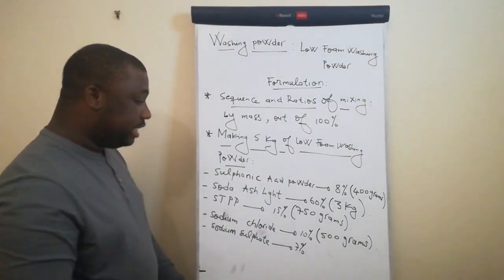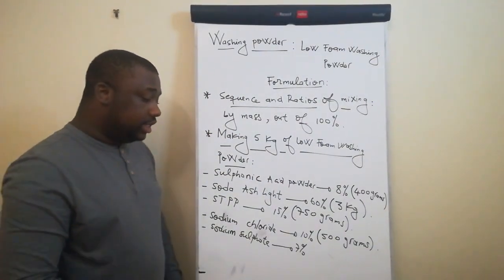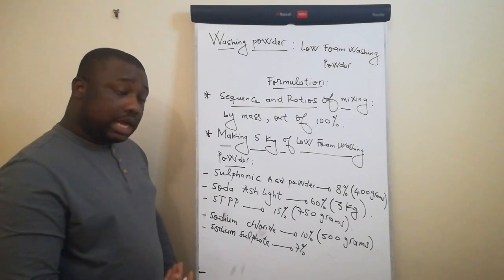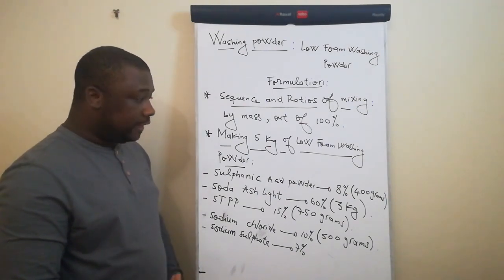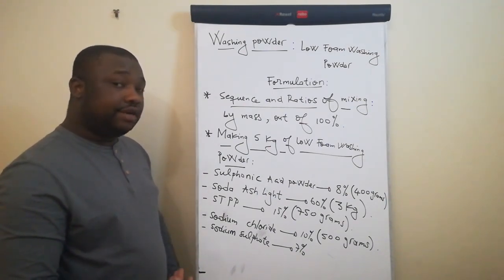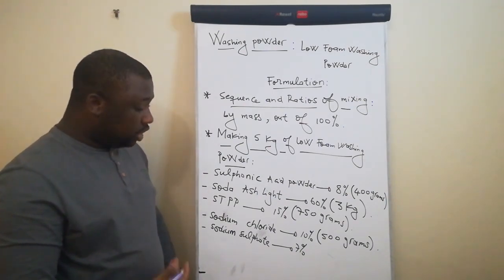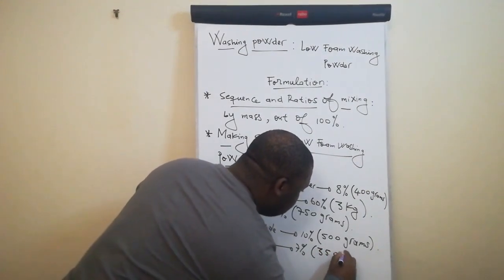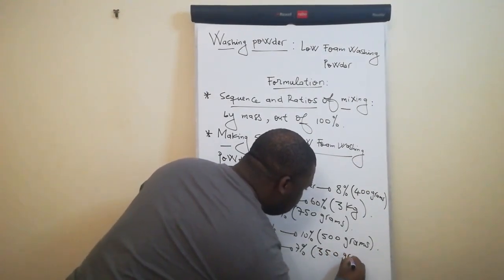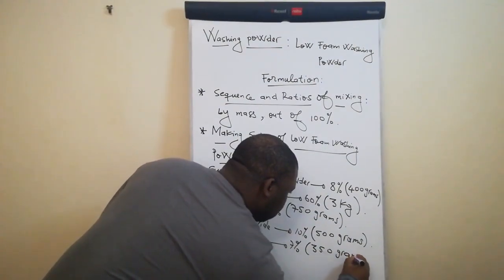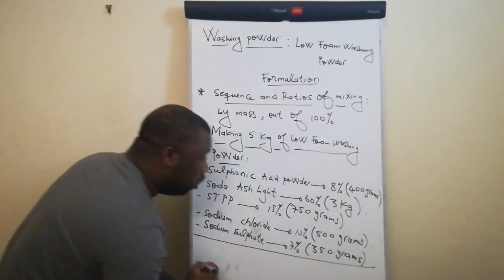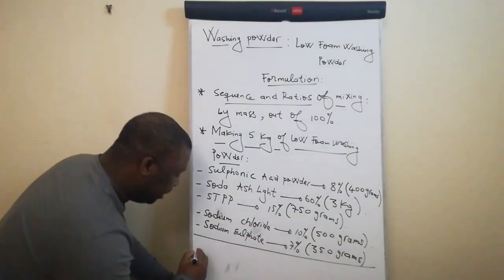The next ingredient is sodium sulfate. This should be 7% of the total mass. Out of the 5 kg that we're manufacturing, we're going to need 350 grams of sodium sulfate. By doing this, you obtain 5 kg of low foam washing powder.